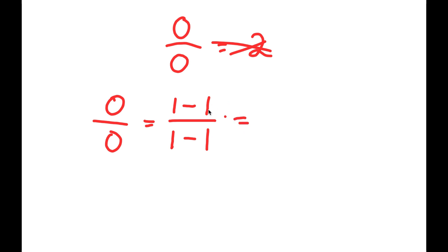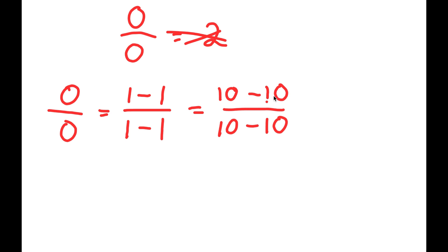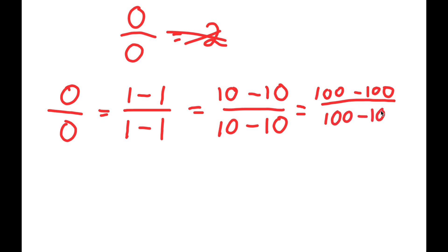Now, if this is true, then this means that this is also the same thing as 10 minus 10 over 10 minus 10. And if that is true, then this is also the same thing as 100 minus 100 over 100 minus 100. Because all of this is true, now I can start making things a little more complicated.